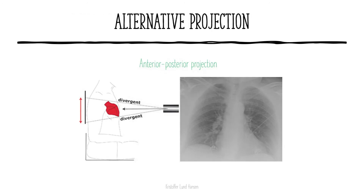Alternatively, we can take an anterior-posterior projection. This is more commonly done if the patient is bedridden or if the patient is in isolation where we have to bring a portable x-ray machine. What is important to know with this projection is that the heart is usually magnified, so if you are not aware of it, it can lead to the misdiagnosis of an enlarged heart.